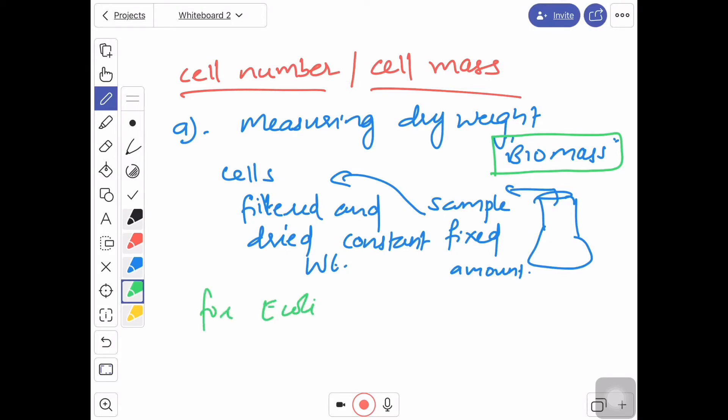For E. coli, they are extensively studied in laboratories. The dry cell weight of 1 billion cells, their dry weight is approximately equal to 150 milligrams. So we have standard values and thus we can calculate the number of cells or the dry weight of a cell culture for assessing the growth of cell culture.